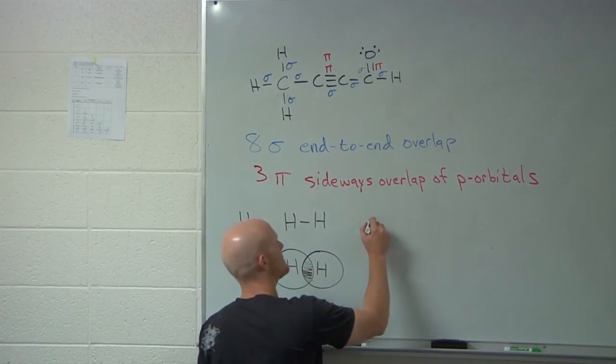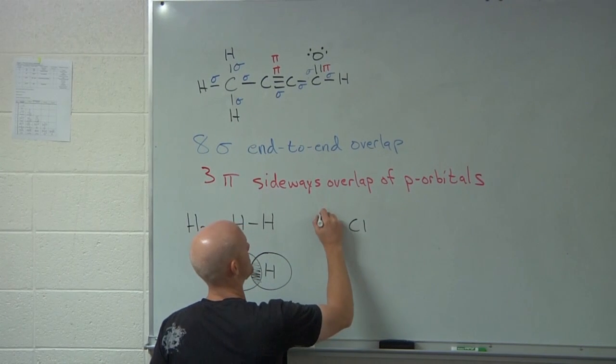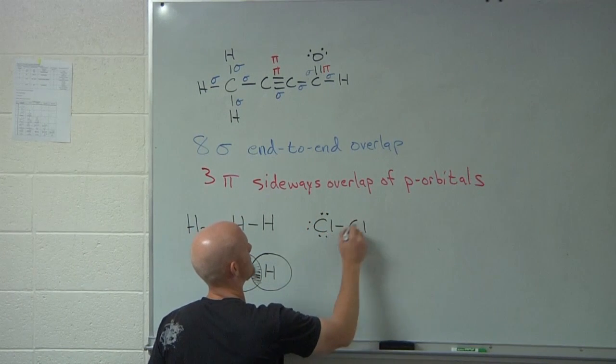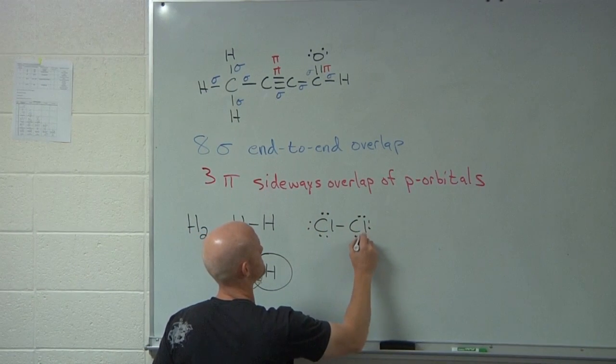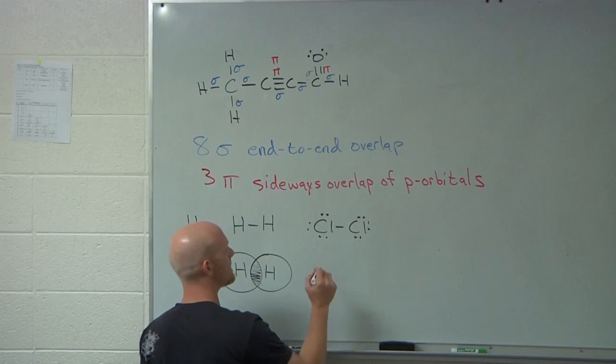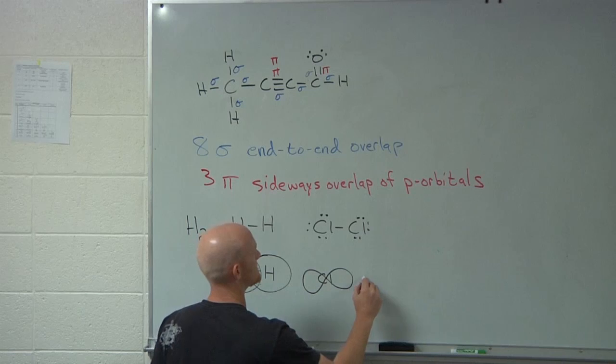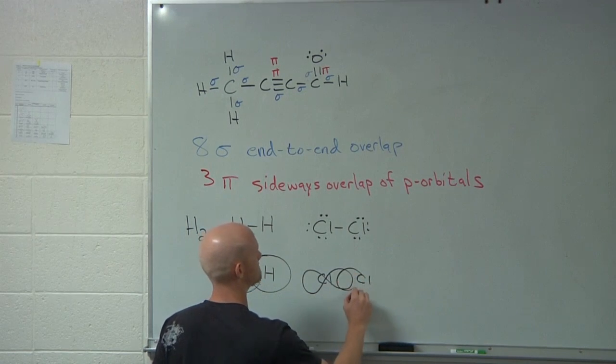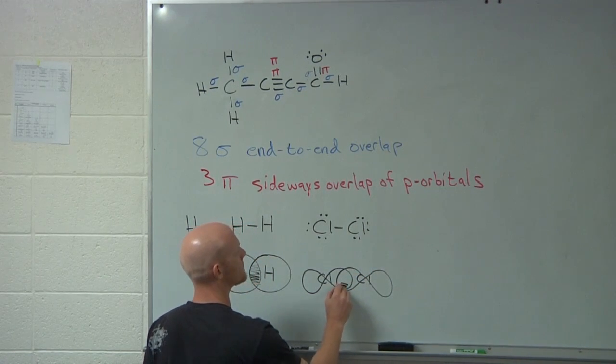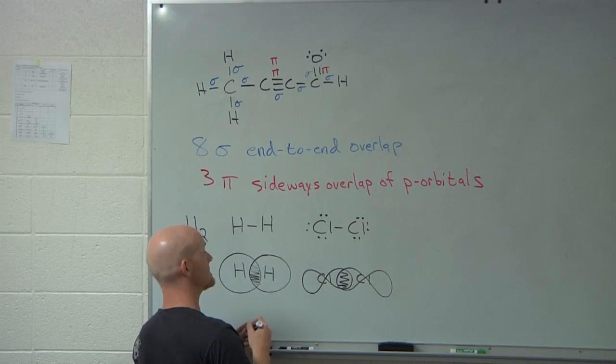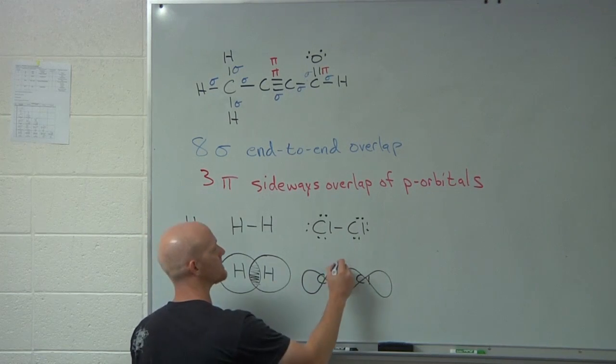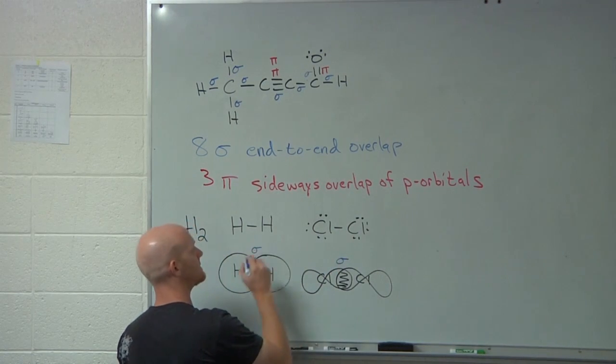The same thing as if you had, say, Cl single bonded to Cl. Well, in this case, chlorine has his unpaired valence electron in a p orbital. And so does this chlorine. And if they overlap in an end-to-end fashion, again, that is again referred to as a sigma bond.